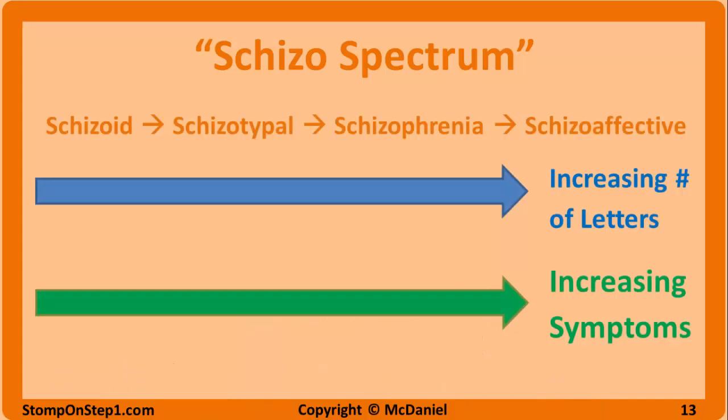As a memory mnemonic, you can think of there being a continuum from schizoid to schizoaffective, where each successive step has most of the characteristics of the previous step plus additional symptoms. The way I remember this is that as the number of letters increases, so do the number of symptoms. Schizoid personality disorder is when a person is very introverted and voluntarily withdraws from social interactions. Schizotypal can be thought of as schizoid symptoms plus magical thinking and odd behavior. Schizophrenia can be thought of as schizotypal symptoms plus psychosis. And schizoaffective disorder is basically schizophrenia plus a mood disorder. Schizophreniform unfortunately does not fit into this mnemonic. Schizoid and schizotypal will be covered in much more detail in a later video about personality disorders.